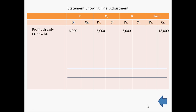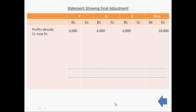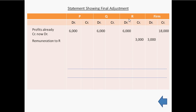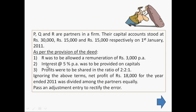After this, we will allow remuneration to R of Rs 3,000 per annum. We will increase the balance of R's capital account, writing Rs 3,000 on the credit side of R's capital account. And this Rs 3,000 is a loss to the firm, so we will write this Rs 3,000 on the debit side of the profit and loss appropriation account. Next, we will allow interest on capital at the rate of 5% per annum, which was omitted but now we will allow.